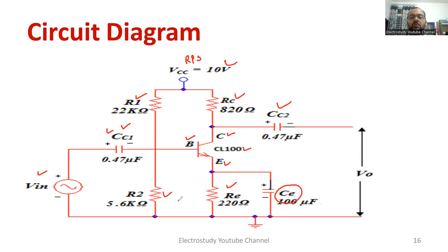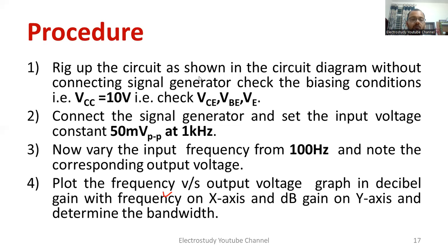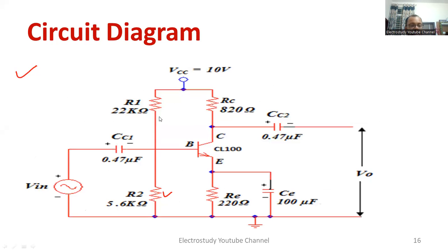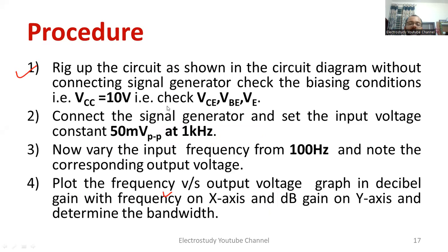Before watching this video, please watch my video on how to use the breadboard and make connections — the link is in the description box. Connect the circuit as per the given circuit diagram and provide a supply of 10 volts as VCC from the RPS. Then check VCE — the voltage across collector and emitter — and VBE. After that, set the input as a 50 millivolt peak-to-peak sinusoidal waveform at a frequency of 1 kilohertz using the signal generator and CRO.